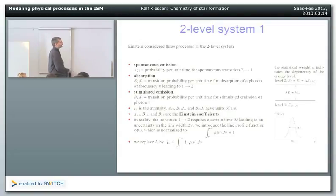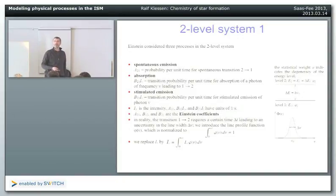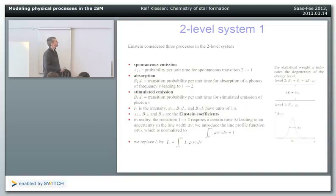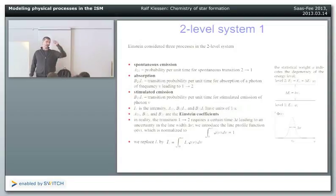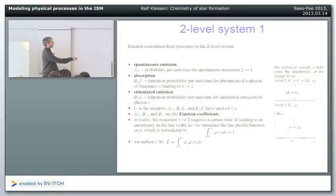You can excite this transition in several ways. If you are in the upper level, spontaneous emission occurs with coefficient A21, the probability per unit time for a spontaneous transition from upper to ground level. If you are at the ground level, a photon of the right frequency can be absorbed - the transition probability is B12 times the ambient radiation field, coupling to the photon density at that frequency. This is the transition probability per unit time for absorption from level 1 to 2.